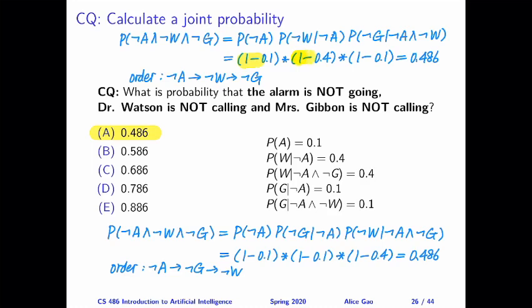we need a lot of the probabilities where the variable is false, and we don't have those directly. So we need to take one minus of the probability, the corresponding probabilities that we have. But other than that, the idea is exactly the same.